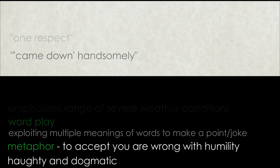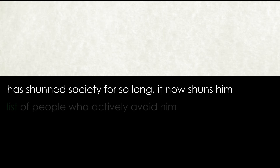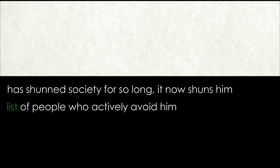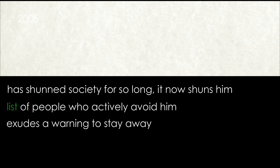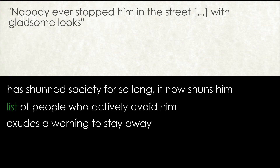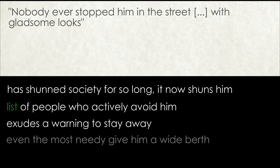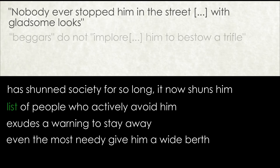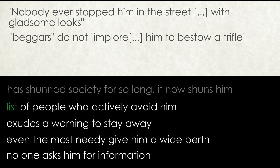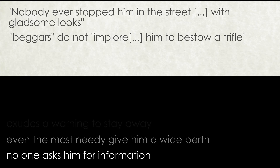This is illustrated in the extract where it is shown that Scrooge has shunned society for so long that it now shuns him. Dickens lists the various types of people who actively avoid him, the reactions of whom get increasingly extreme. His demeanour is so unwelcoming that it is as though he exudes a warning to stay away. He is shown not to be well liked, as nobody ever stopped him in the street with gladsome looks to ask after his health or to invite him to call on them. He is given a wide berth by even the most needy — even other outsiders such as beggars perceive him as alien and do not implore him to bestow a trifle. Even simple information such as the time or directions, which would cost nothing, are not asked of him. Dickens ends the paragraph with hyperbole.